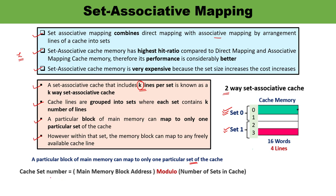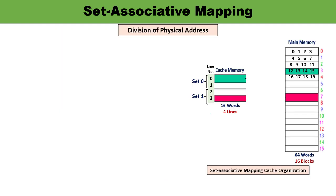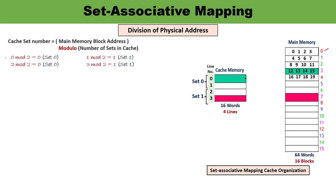To determine which block of main memory maps to which set, there is a formula: cache set number = main memory block address modulo number of sets in the cache, where modulo is the remainder operator. For block 0: 0 mod 2 = 0, so it maps to set 0. For block 1: 1 mod 2 = 1, so it maps to set 1. For block 2: 2 mod 2 = 0, so it maps to set 0.